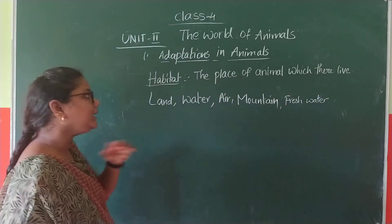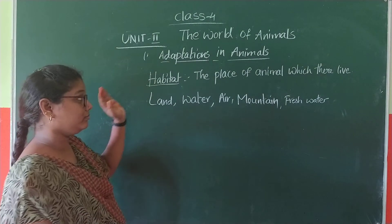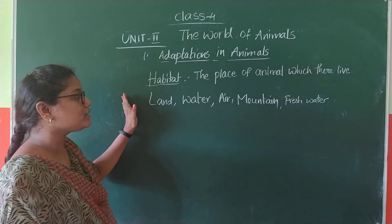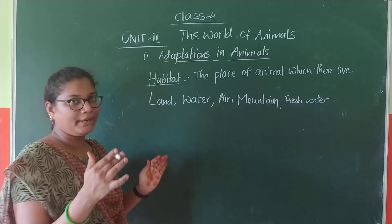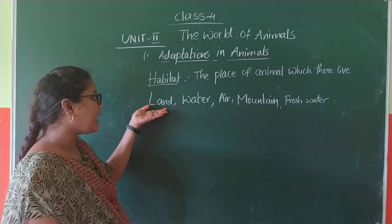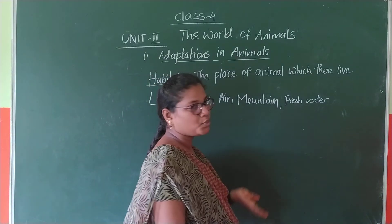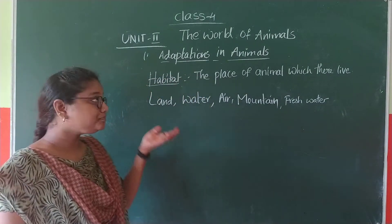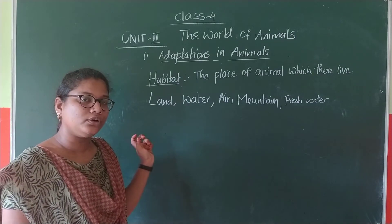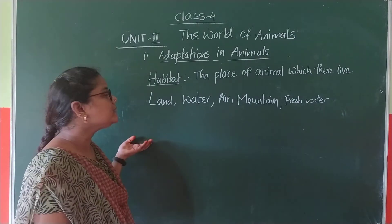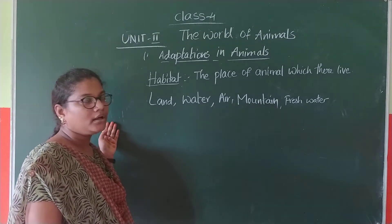Habitat is the place where the animal lives. Land, water, air, mountain, fresh water. For example, lion — forest. Caves. The cave is the house and the forest is the habitat of the lion.